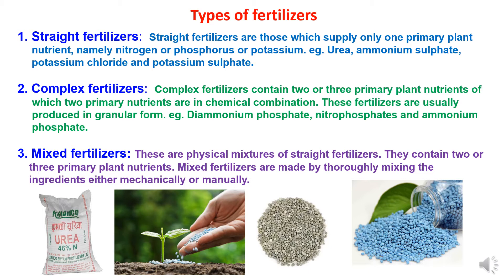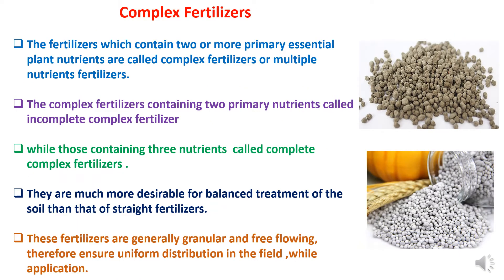Mixed fertilizers are physical mixtures of straight fertilizers and they can contain two or three primary plant nutrients. These mixed fertilizers are made by thoroughly mixing the ingredients, which may be mixed mechanically or manually. The fertilizers containing two or more primarily essential plant nutrients are known as complex fertilizers, also called multiple nutrient fertilizers.